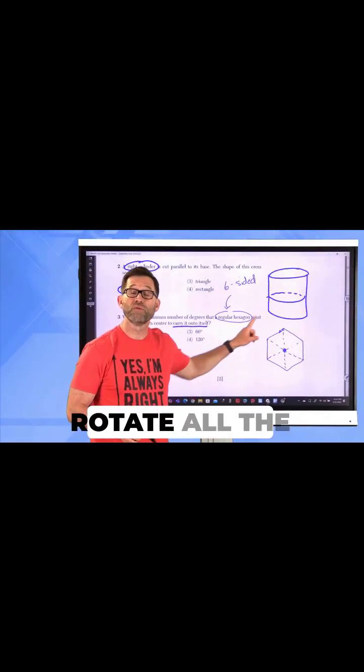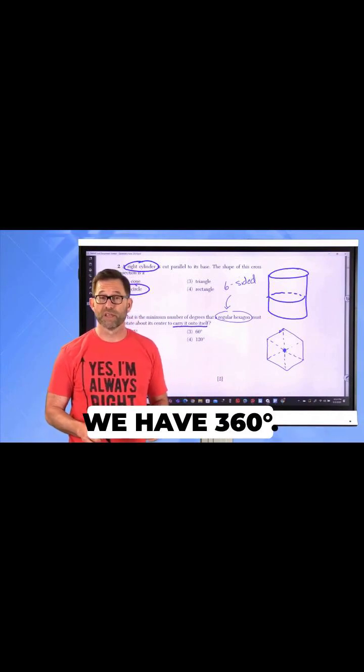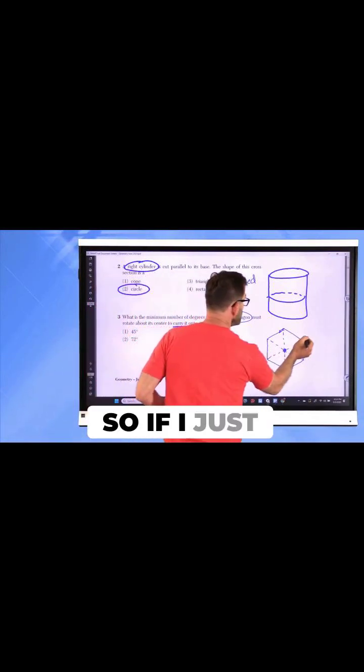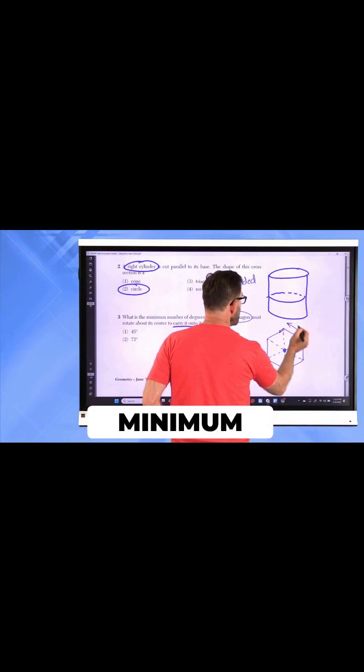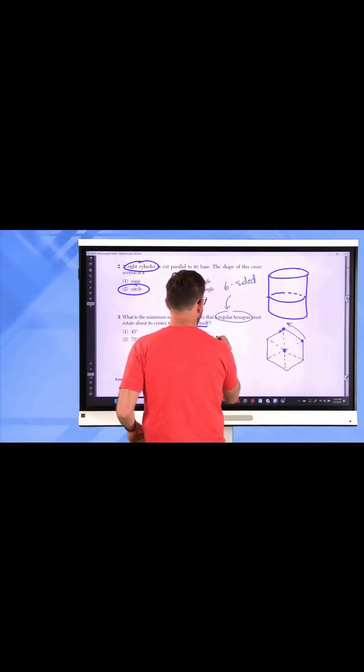We all know that if we rotate all the way around in a complete circle, we have 360 degrees. So if I just want to rotate it the minimum amount that this vertex will then get mapped onto this one, well,